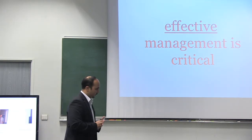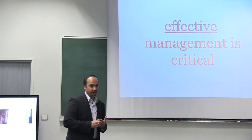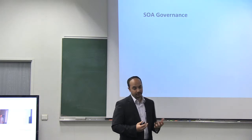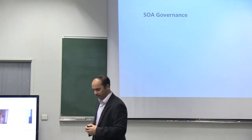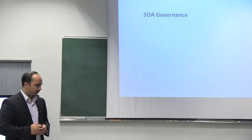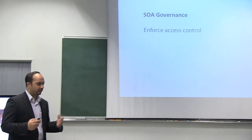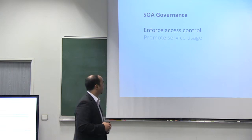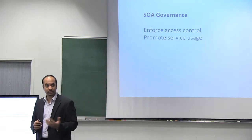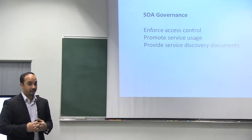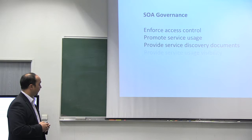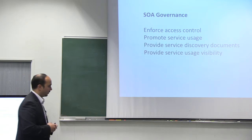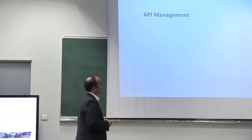Effective management is critical, and this is a lesson we've learned primarily from SOA governance. SOA governance is about enforcing some form of access control, promoting usage of services, providing discovery documents and a library of artifacts, and providing visibility into what's happening. On the surface, that's pretty similar to API management — enforce access control, promote API usage, provide API documentation instead of discovery documents, and provide usage visibility.